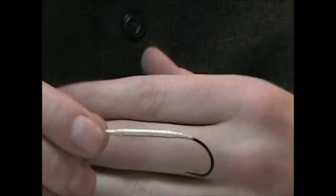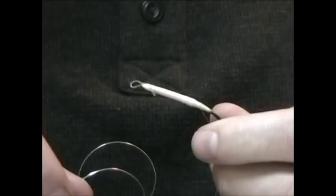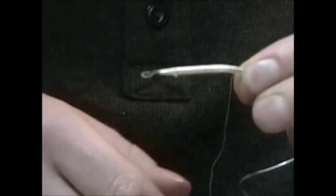To start the fly, you want to have your thread at the top of the tag. This is small oval silver tinsel, and I've stripped the tinsel from the core right at the tie-in point to help make a smoother transition.